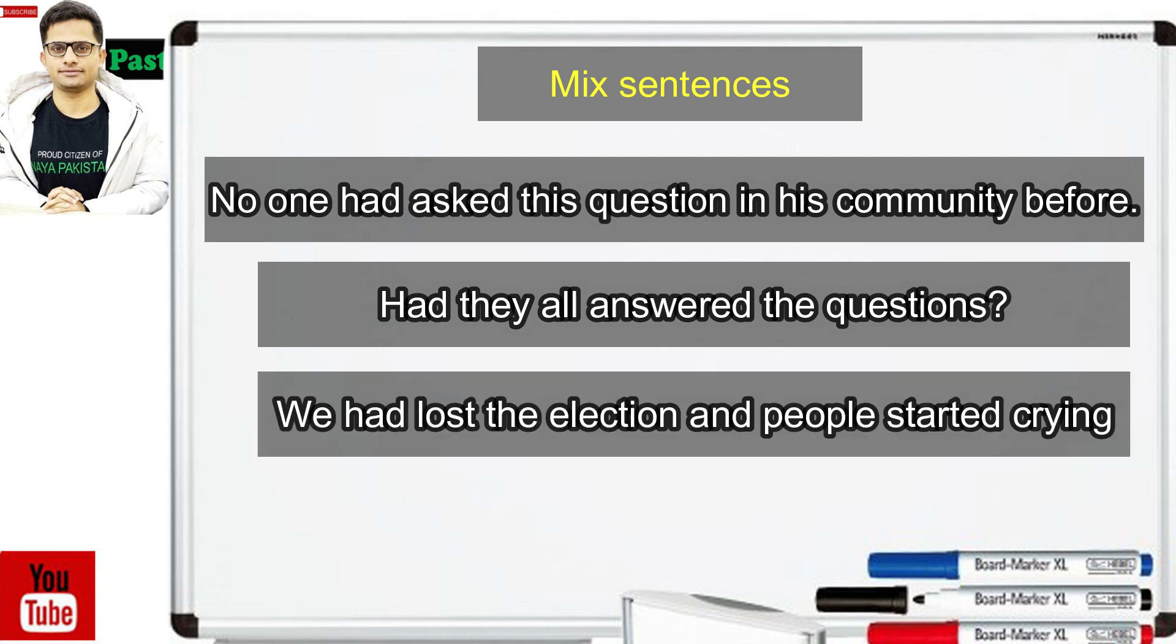Next sentence: we had lost the election and people started crying. ہم election ہار چکے تھے اور لوگ رونے لگے.